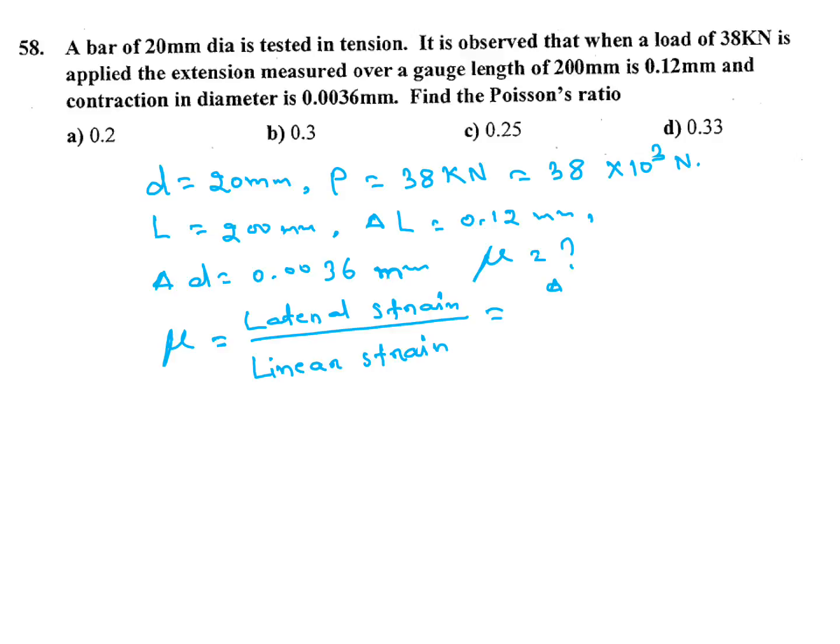We know Poisson's ratio is ratio of lateral strain and linear strain. Lateral strain is change in diameter by original diameter divided by linear strain, change in length by original length. So if you put the value, how much we will get? Delta D by D into L by del L.